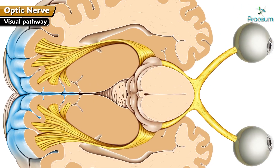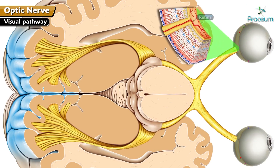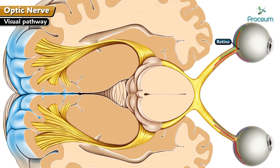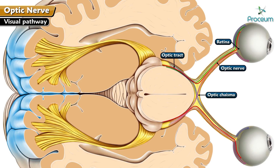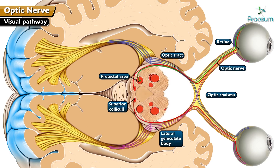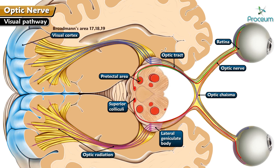Here's the schematic of the visual pathway. The axons of the ganglionic cells of the retina transmit the information to the optic nerve through the optic chiasma via the optic tracts, and the information is relayed to the pre-tectile area, the lateral geniculate body, and the superior colliculi. The lateral geniculate body is relayed via the optic radiation to the visual cortex, areas 17, 18, and 19.